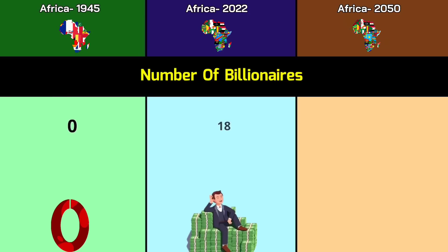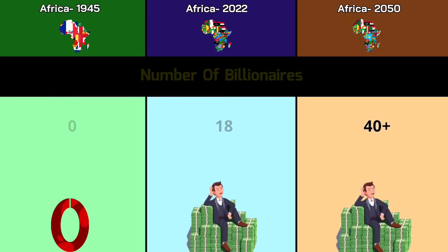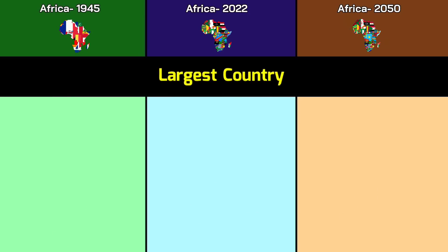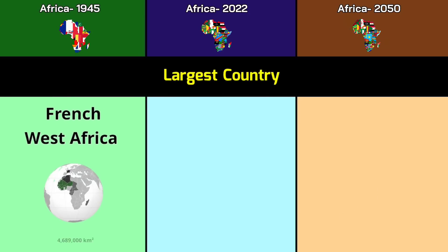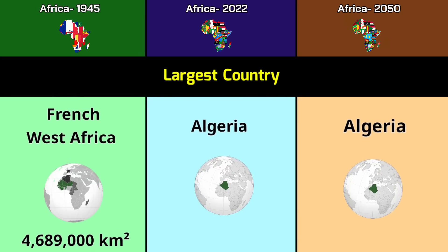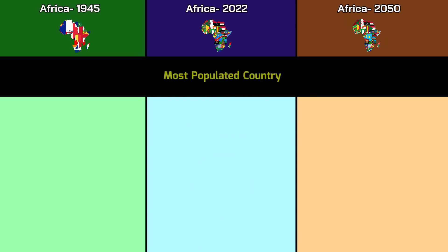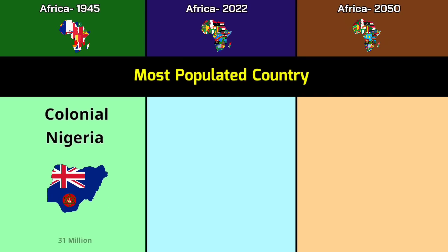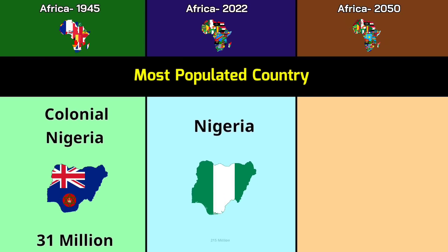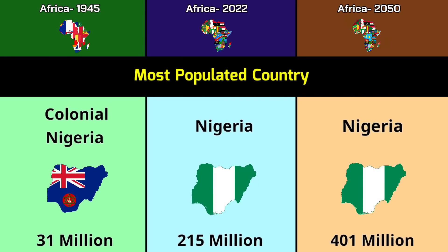GDP PPP: 100 billion dollars in 1945; 7.6 trillion in 2022; 55 trillion in 2050. GDP per capita PPP: 438 dollars, 5,733 dollars, and 22,000 dollars. Number of billionaires: 0 in 1945; 18 in 2022; more than 40 in 2050. Largest country: French West Africa at 4.69 million km² in 1945; Algeria at 2.38 million km² for both 2022 and 2050.